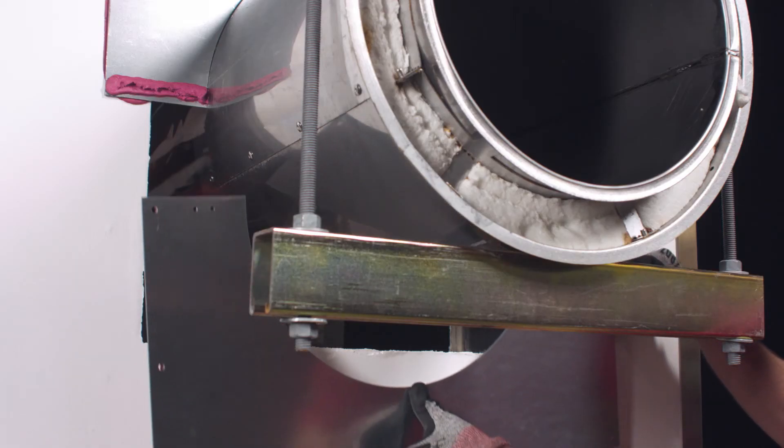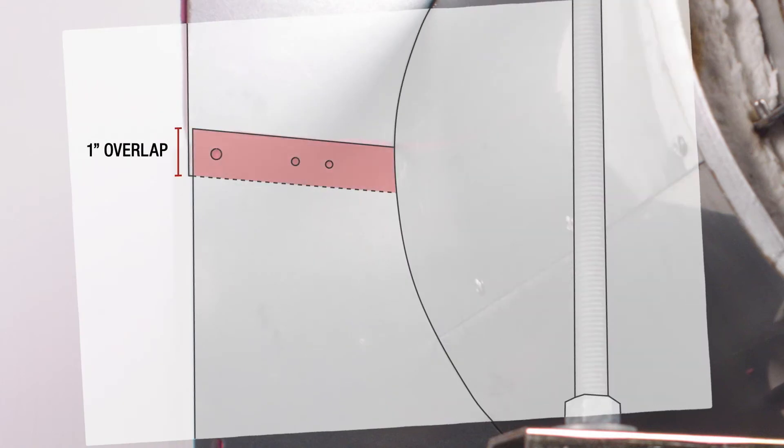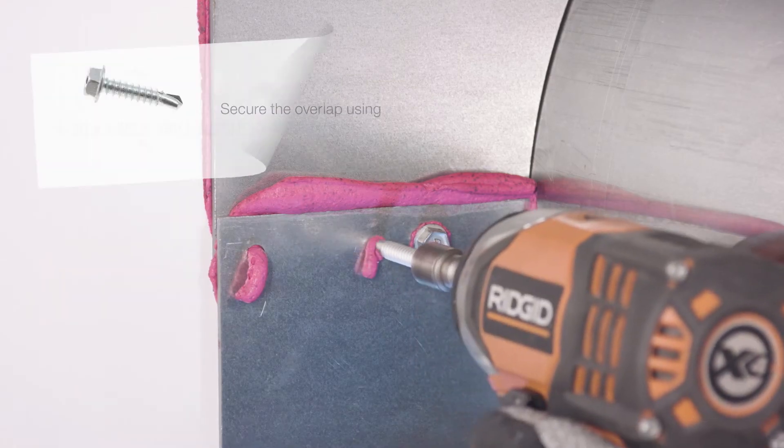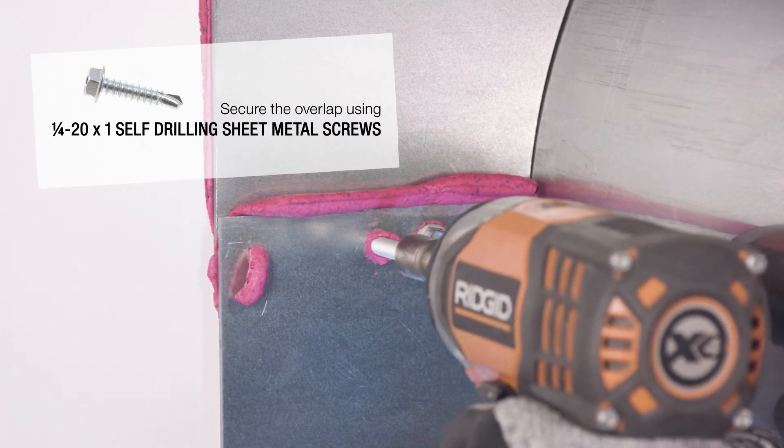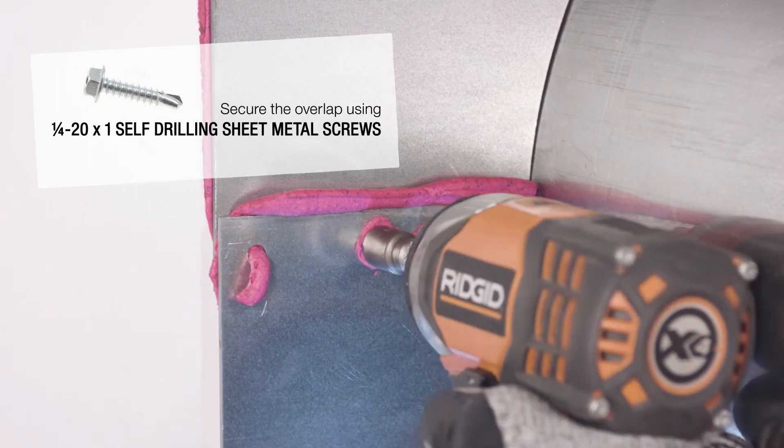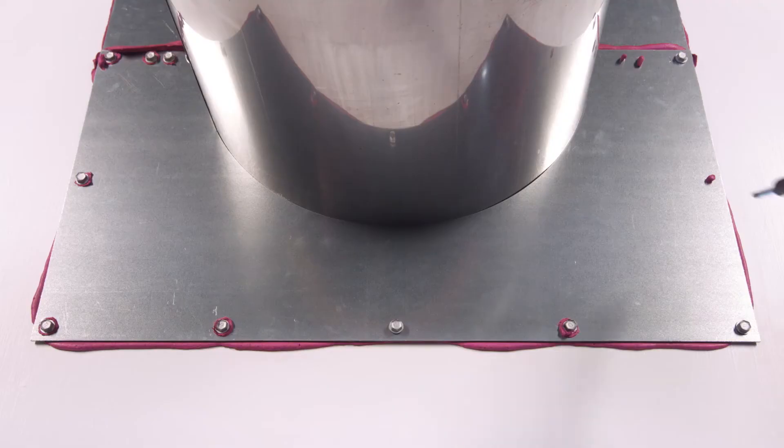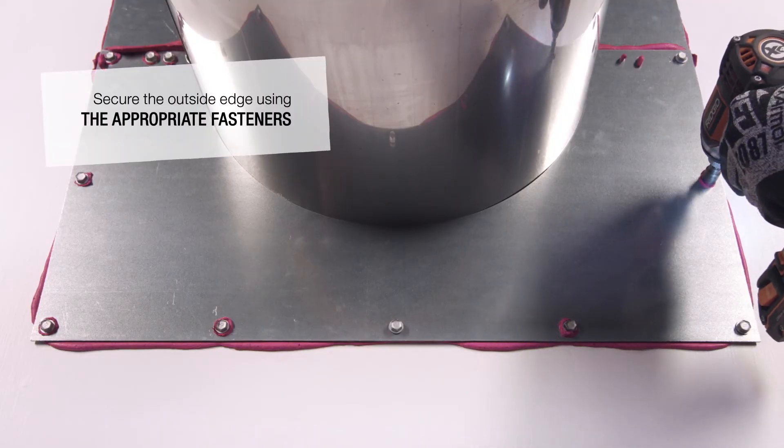Press the second fireplate to the wall with a one inch overlap so the centering holes on each plate line up. Secure the overlap using quarter twenty by one self-drilling sheet metal screws. Then, secure the outer edge using the appropriate fasteners.